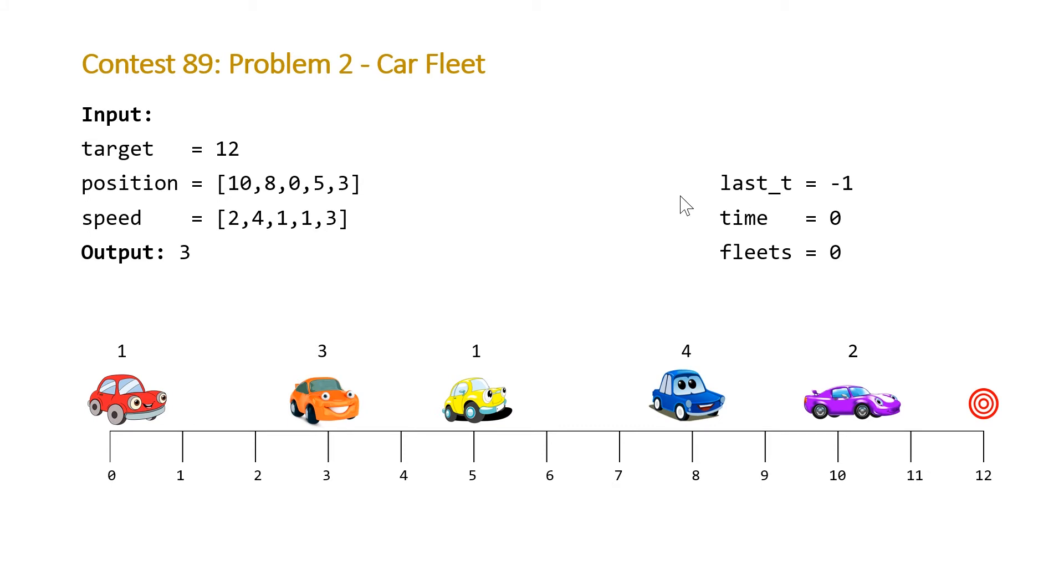So how are we going to figure this out? Basically, we're going to have three different variables. The last time that a car arrived, the time of the current car that we're going to calculate for each car, and then the number of fleets. And so what we're going to do is we're going to sort our cars by their initial position, and then we're going to process the cars from the ones closest to the target to the ones furthest away. So we'll first look at the purple car. We're going to calculate at what time is this purple car going to arrive at the target destination. This is simply the target minus the current position divided by the speed that it's going. So it has two miles to go, and it drives two miles per hour. So it's going to get there in one hour. We're going to calculate that it'll get there at time one hour. And because this time is greater than the last time, always the first car is going to create the first fleet. We're going to end up with one fleet, and then we're going to reset the last time that a car got to the target to the time that we just calculated.